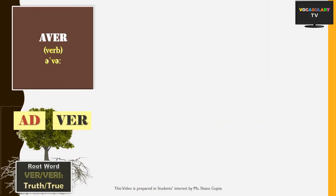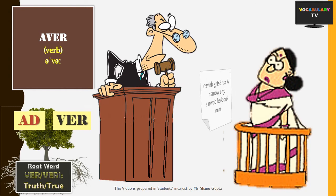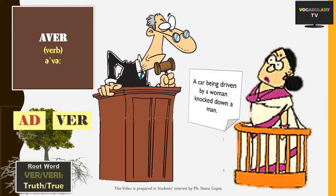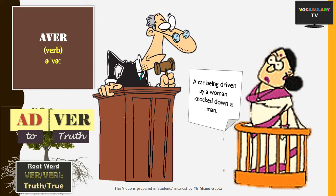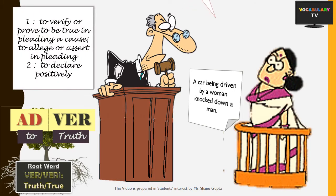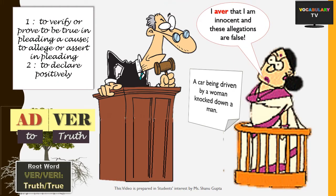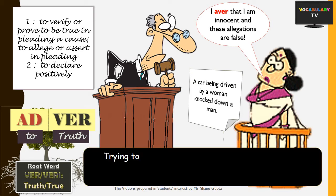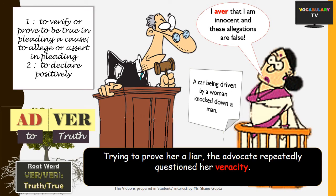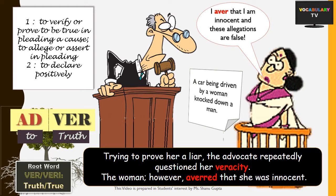Next word is 'aver,' which is made up of the prefix 'a' meaning 'to' or 'towards,' and 'ver' meaning truth. When you aver, you declare or confirm that something is true, and you are very confident in pleading your cause that you are speaking the truth. Like a female who allegedly knocked down a man while driving — the advocate repeatedly questioned her veracity, but the woman averred, or stated confidently, that she was innocent.